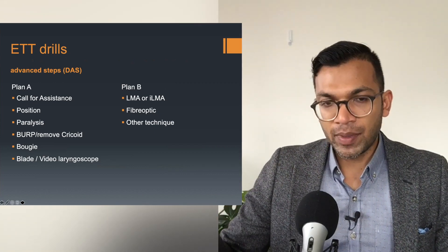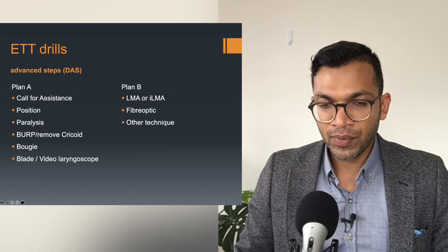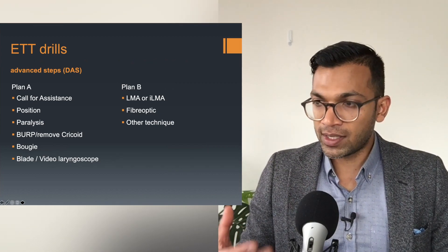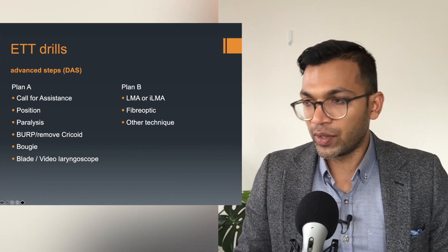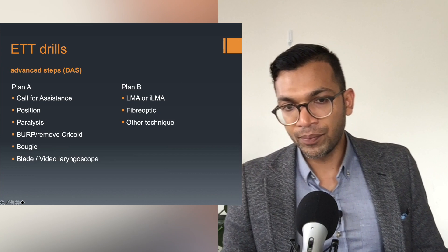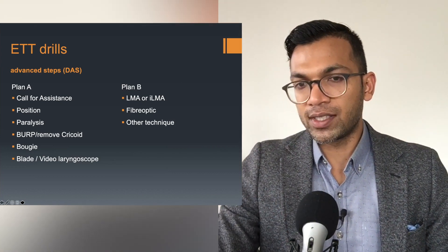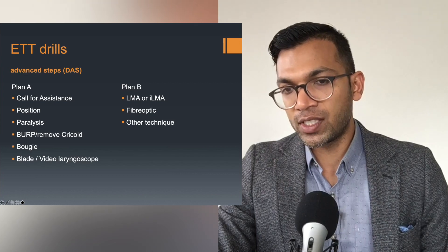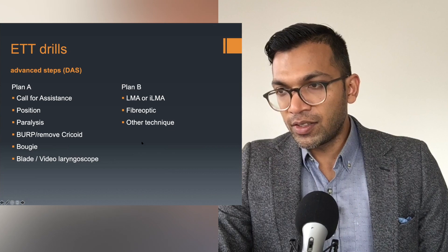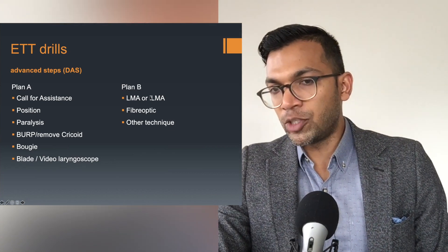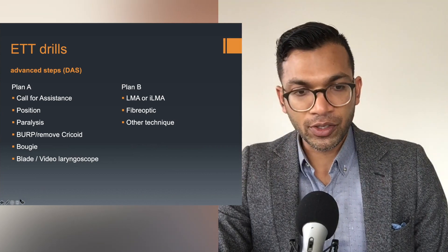A bougie is in the theater but needs to be taken out of its packet, so that's the second thing I would request. Failing that, or simultaneously, I'd ask a theater tech or nurse to get me the video laryngoscope or a different blade if available. Those are the things I drill every single time. For advanced techniques later in training: intubating LMAs, fibre optics, and some other advanced techniques.